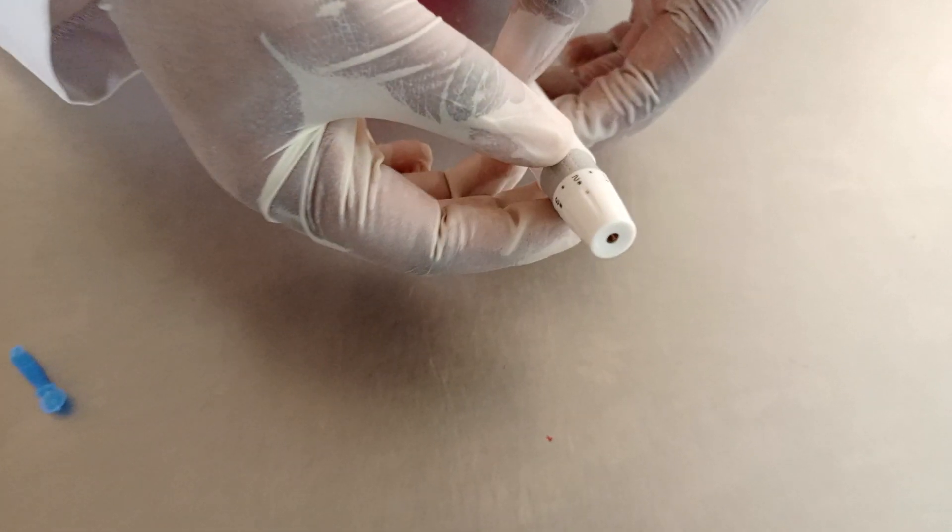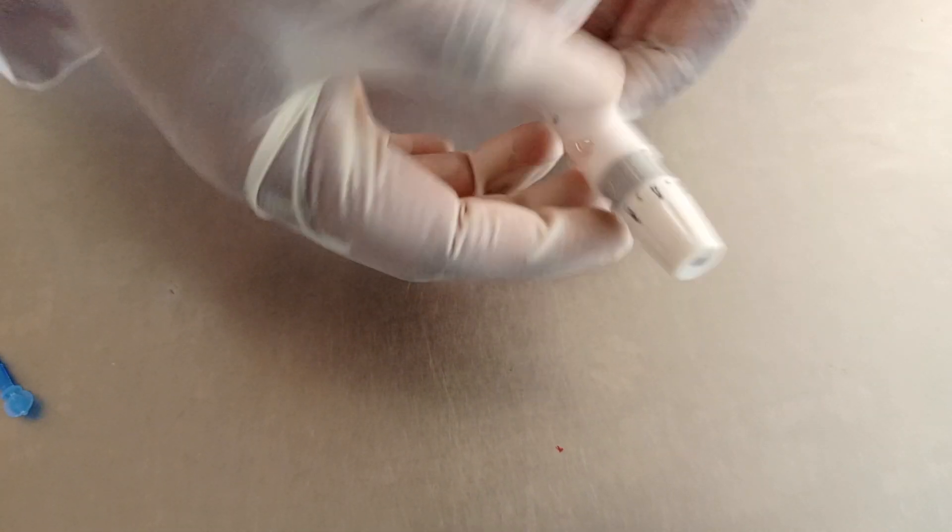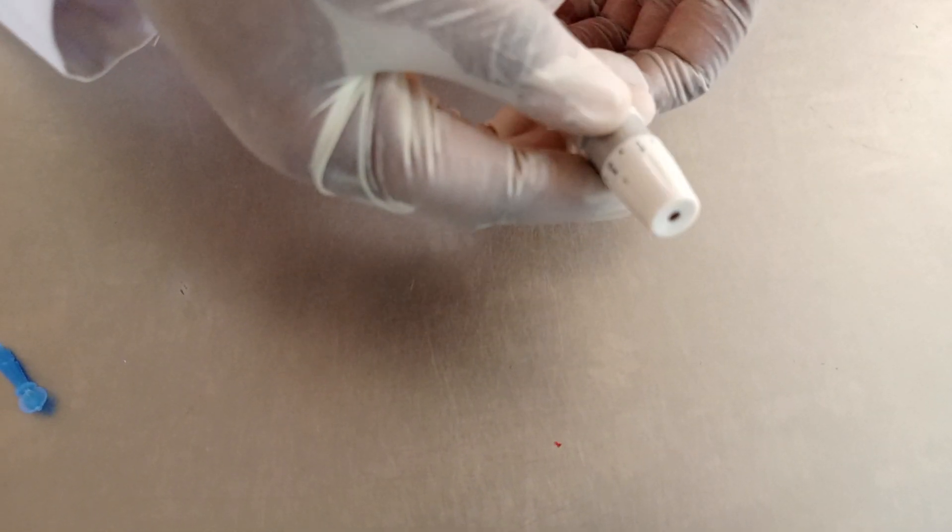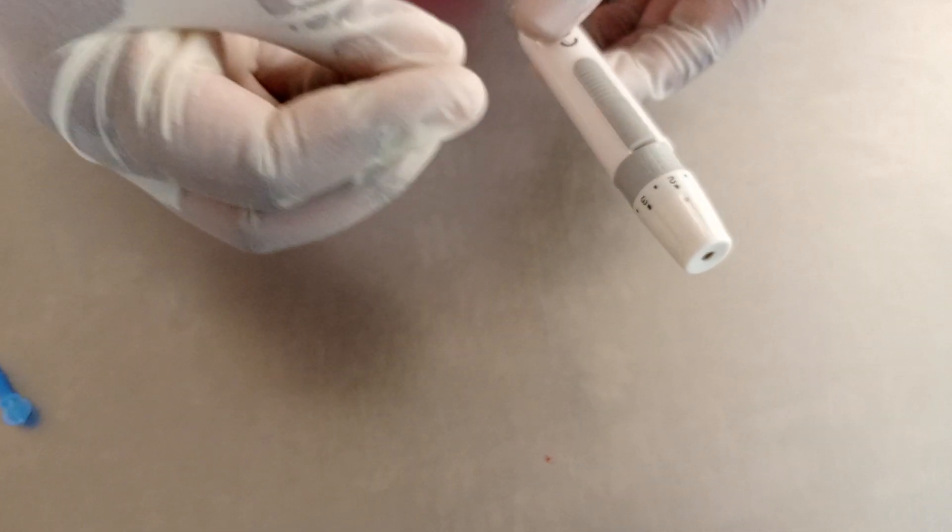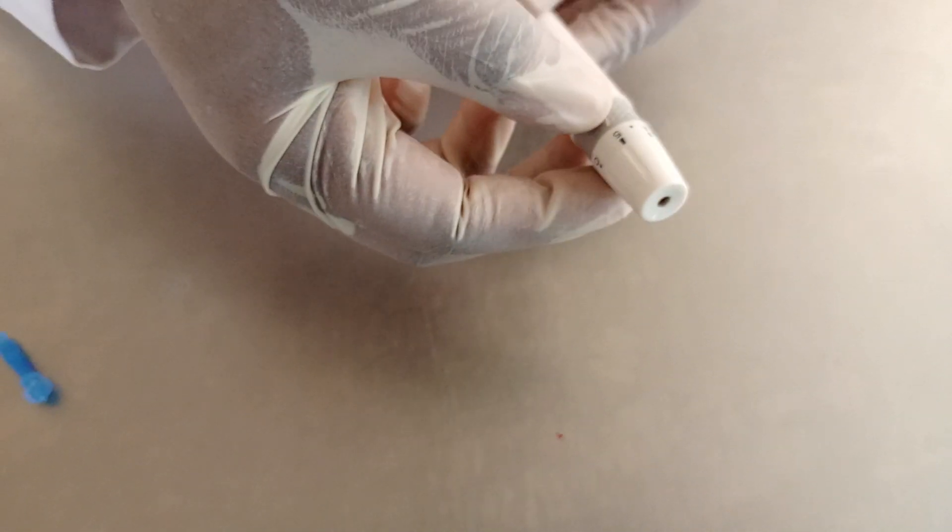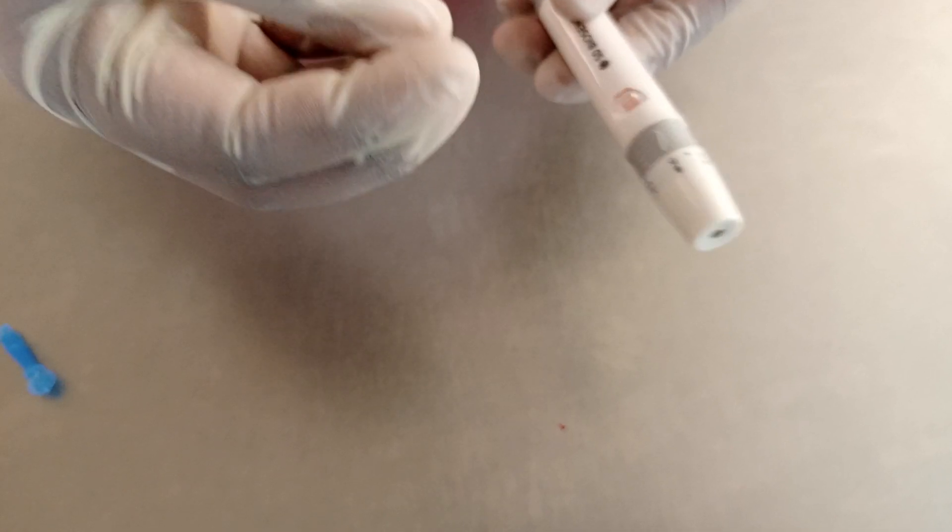The Elascent device has numbers from 0 up to number 5. The smaller the number, the thinner the skin of the patient you want to inject. And the bigger the number, the thicker the skin of the patient you want to inject.